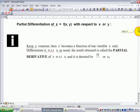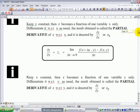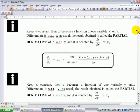If you keep y constant, then z will become a function of only one variable x. So we can differentiate it with respect to x as usual. The result obtained is called the partial derivative of z with respect to x and is denoted by ∂z/∂x or z_x.